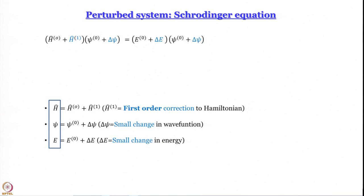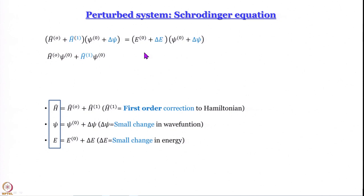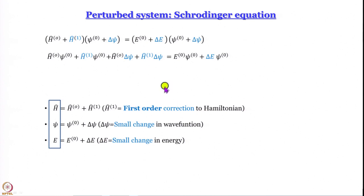Now let us open up the brackets. We are going to have four terms on the left and four terms on the right. The left-hand side gives: Ĥ⁽⁰⁾ψ⁽⁰⁾ + Ĥ⁽¹⁾ψ⁽⁰⁾ + Ĥ⁽⁰⁾δψ + Ĥ⁽¹⁾δψ. The right-hand side similarly gives: E⁽⁰⁾ψ⁽⁰⁾ + δE·ψ⁽⁰⁾ + E⁽⁰⁾δψ + δE·δψ. We now have eight terms — let us see how many will become zero.